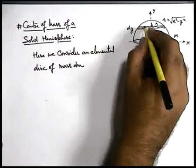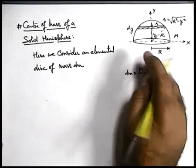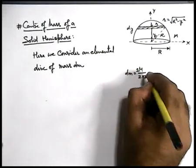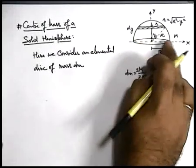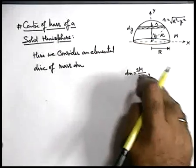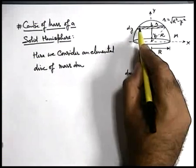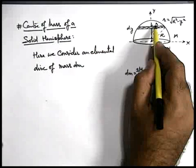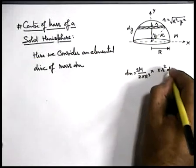Now the elemental mass can be given by M upon the total volume, that is two-thirds pi R cubed. This is the mass per unit volume because the mass M is distributed uniformly in the half-sphere volume, that is two-thirds pi R cubed, which is multiplied by the volume occupied by the disc. Here the surface area of the disc is pi small r squared, and the width is dY, so it can be written as pi small r squared dY.